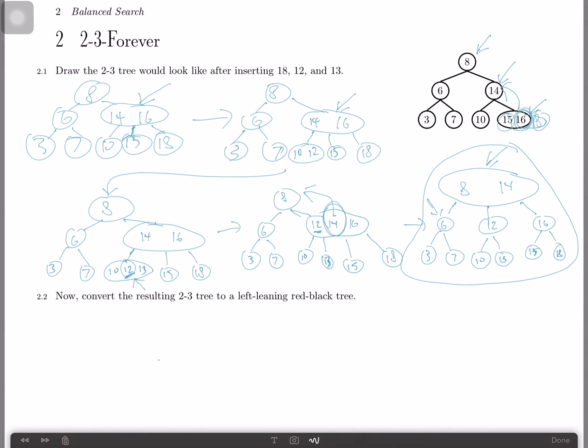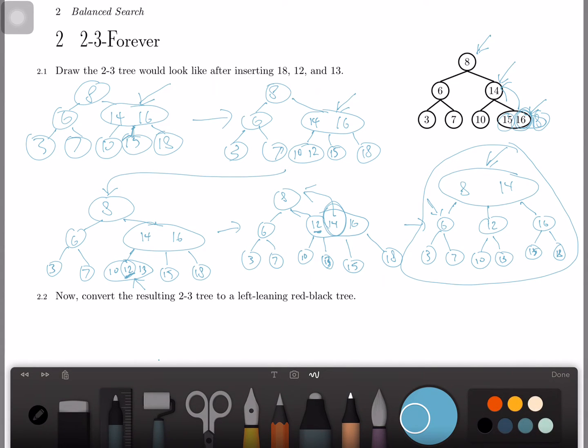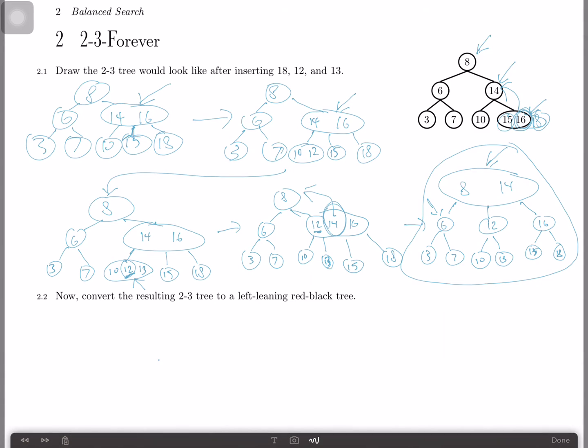So the next thing to do is to convert the 2-3 tree into a left-leaning red-black tree. Before we do that, I think it would be helpful to explain what a left-leaning red-black tree is. One important thing to note is that every 2-3 tree has a unique corresponding left-leaning red-black tree. And this is how we translate 2-3 tree into a left-leaning red-black tree. So what we have are red links. Red links mean that it's connected between two nodes, or two items. If there's a red link between them, that implies that they belong in the same node in the corresponding 2-3 tree. So in our previous case, 8 and 14 would be connected by a red link. And then there's also black links, which just represent normal connections.